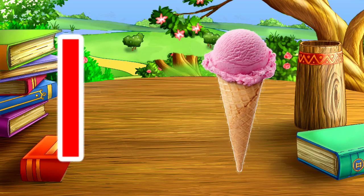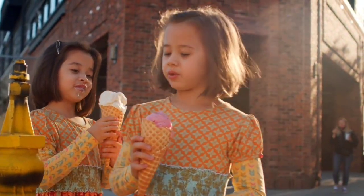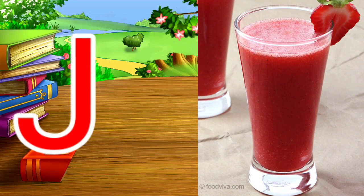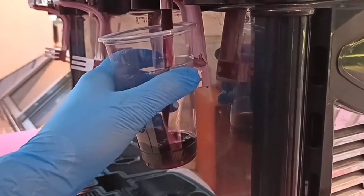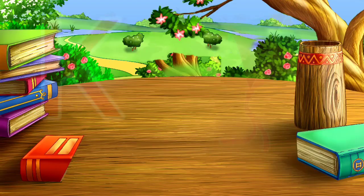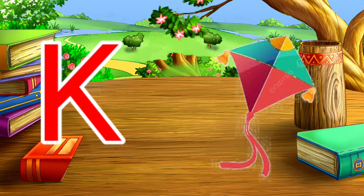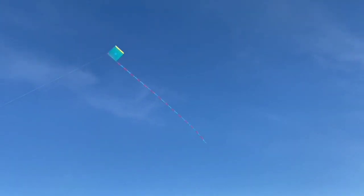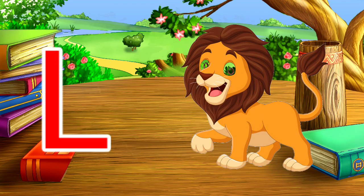I for ice cream. J for juice. K for kite. L for lion.